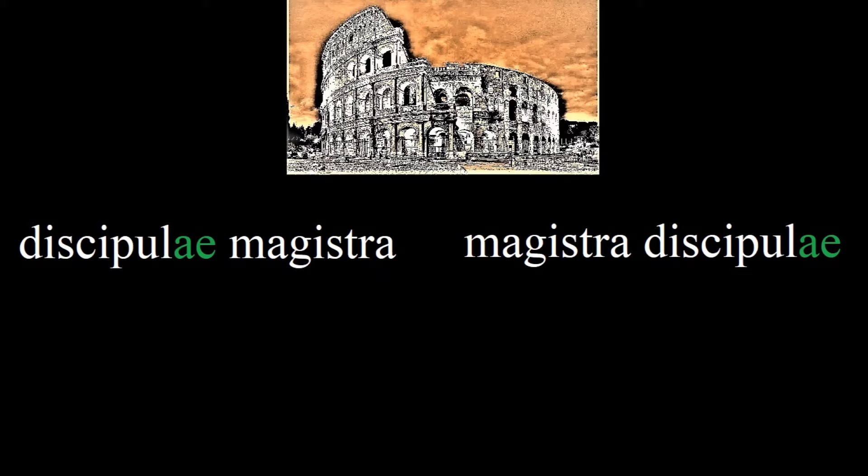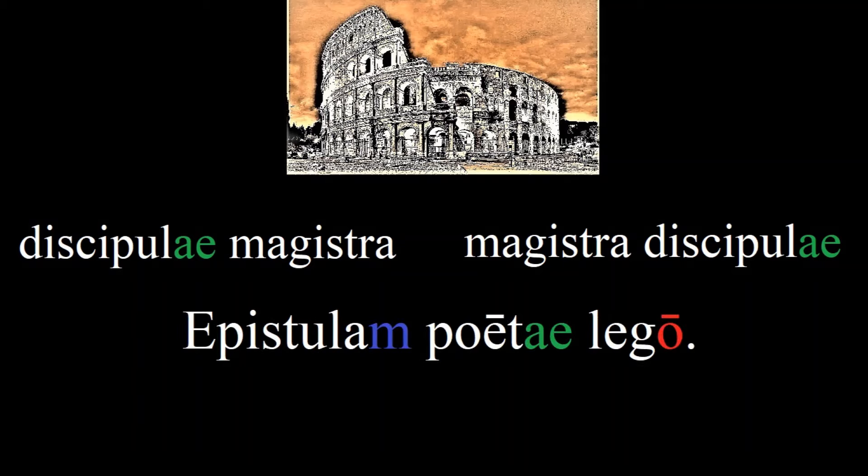So we can think of this either as 'the student's teacher' or as 'the teacher of the student.' Note also that the diphthong AE in Latin is pronounced like the I in 'eyeball.' Try to figure out this sentence now.